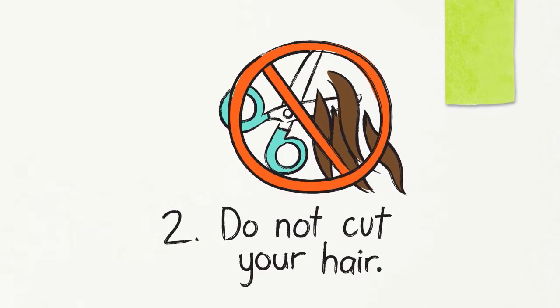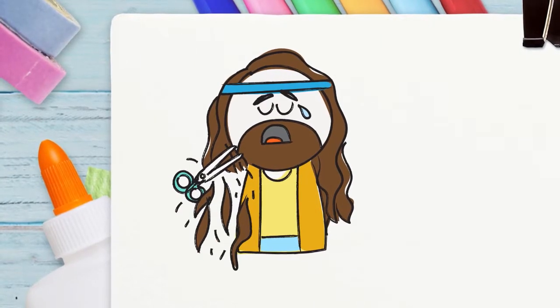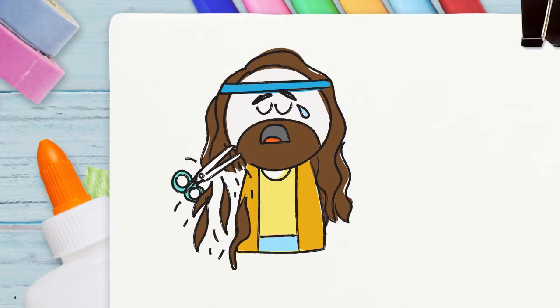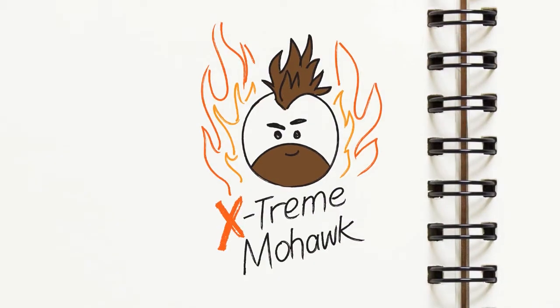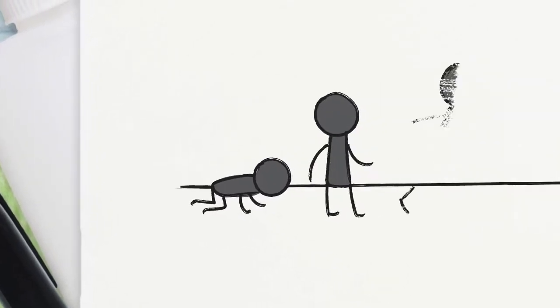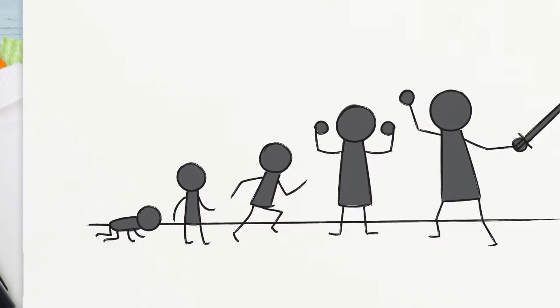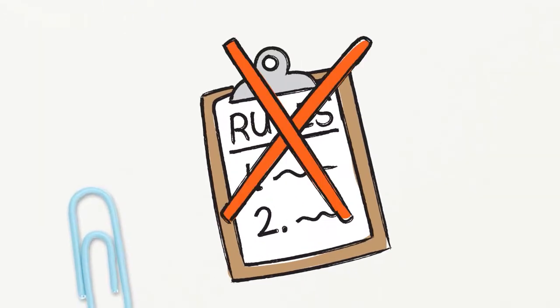Sheesh! Well, the other really important rule for Samson was that he couldn't cut his hair, like ever. Yeah, if he cut his hair, he could kiss his supernatural strength goodbye. I bet Sammy Sam was trying out some awesome hairstyles, like the super slick back, extreme mohawk, or mega triple man bun. I kind of doubt that. As Samson grew up, the spirit of God came upon him many times, giving him great strength to fight the Philistines.